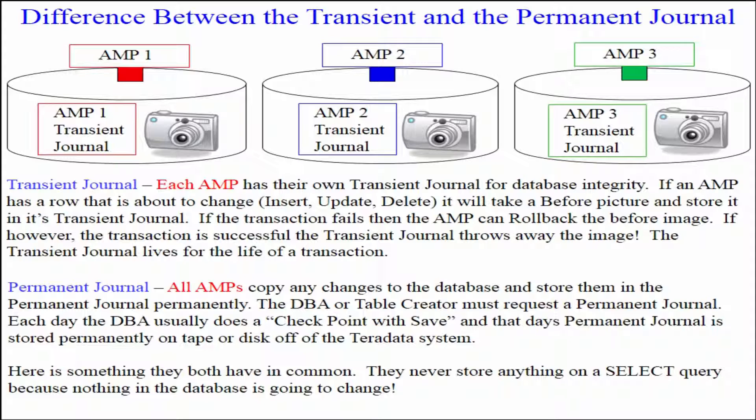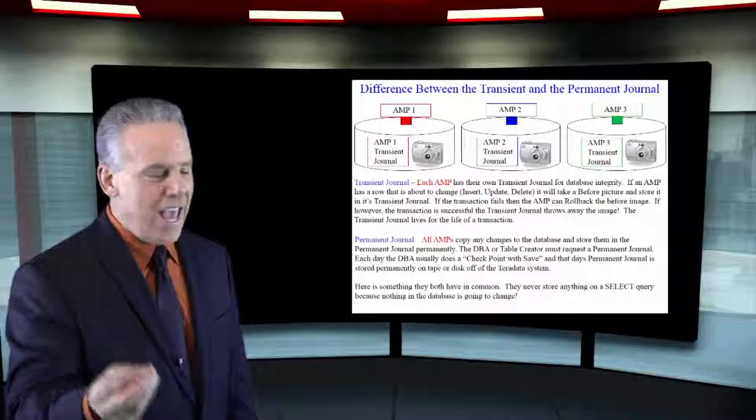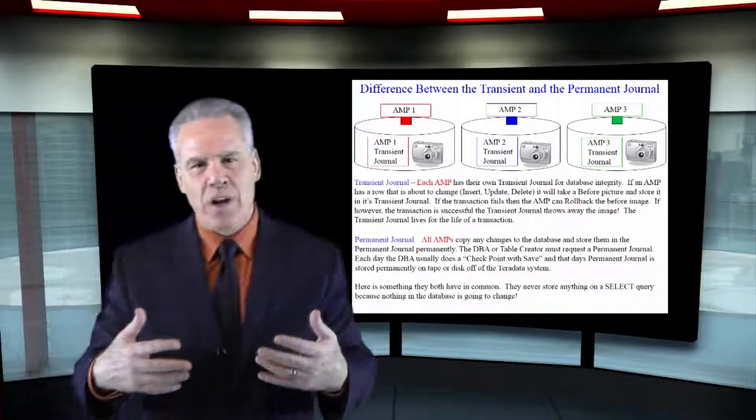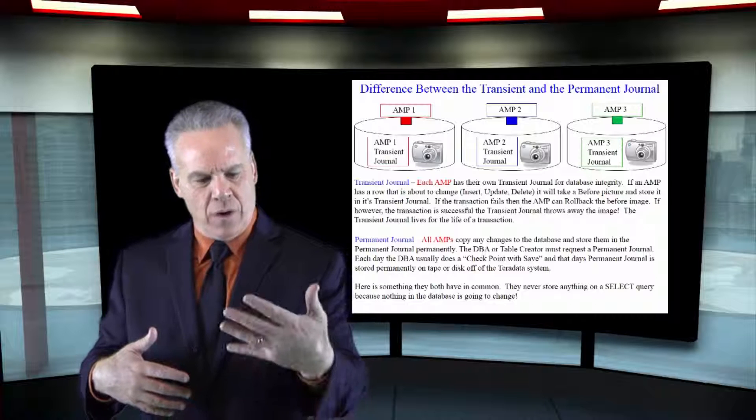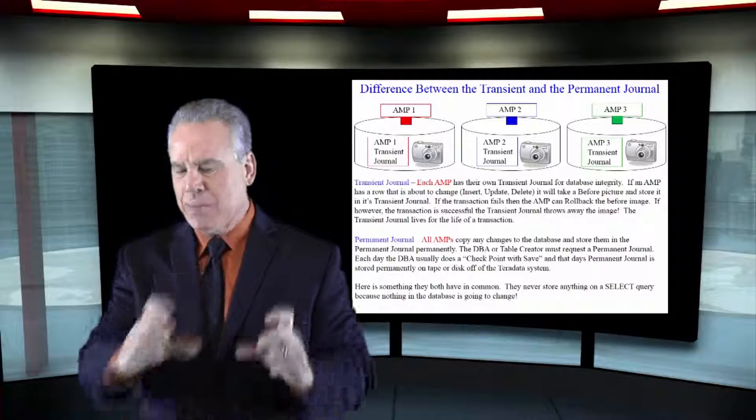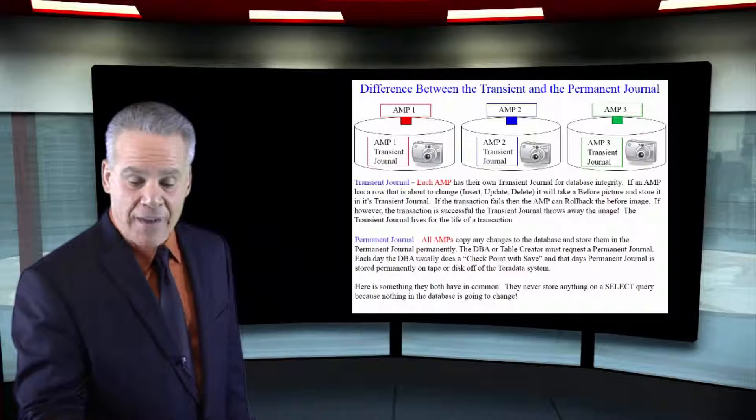Now, the permanent journal is the opposite. Every time you say I want a before picture for a before journal, it takes a before picture. If you say I want an after journal, it takes an after picture after the row has been updated.